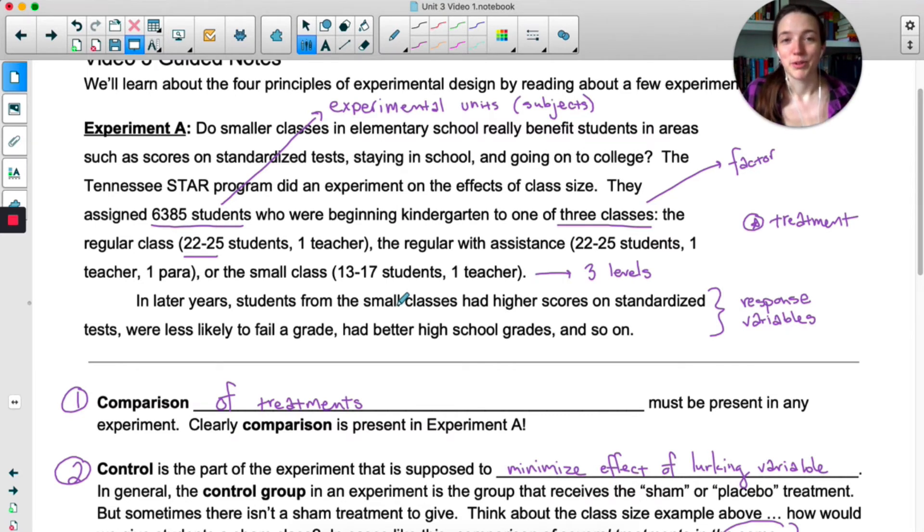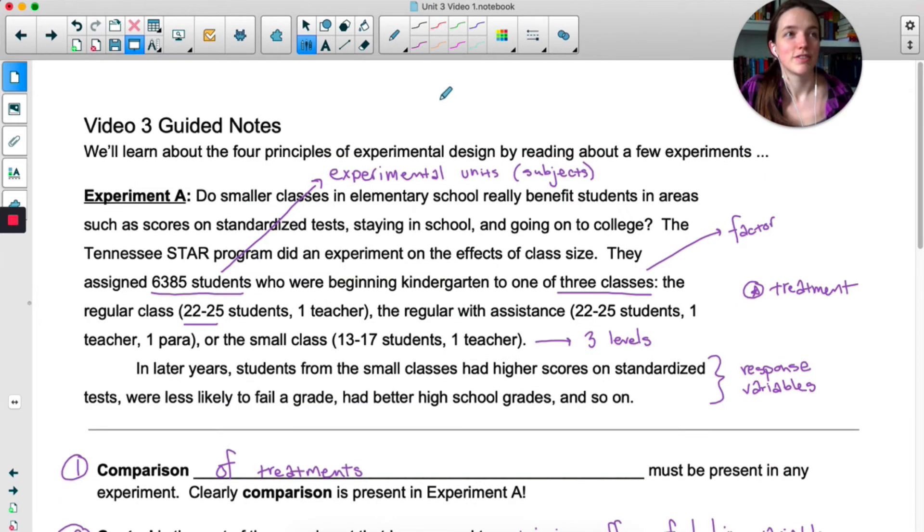Here's another example of how experimenting on humans, specifically human children, is super challenging because if you tell most parents we're going to randomly assign your student to a regular class or a small class, parents aren't going to be cool with that, they're going to want the small class. This is why if you're ever reading an experiment about human children or about education, it's probably not going to be a perfect experimental design because education is important and you don't want to mess that up for kids. Sometimes there's a theoretical experimental design that's perfect and then there's a practical experimental design that is actually realistic for the real world.